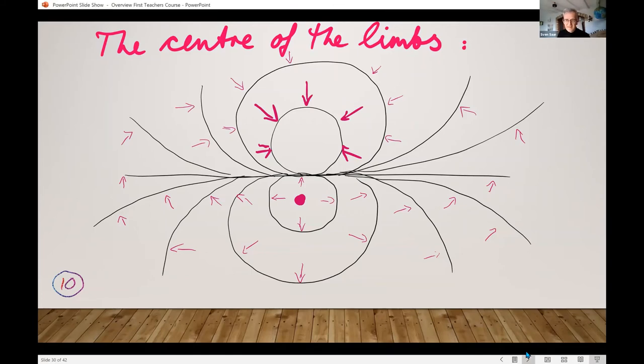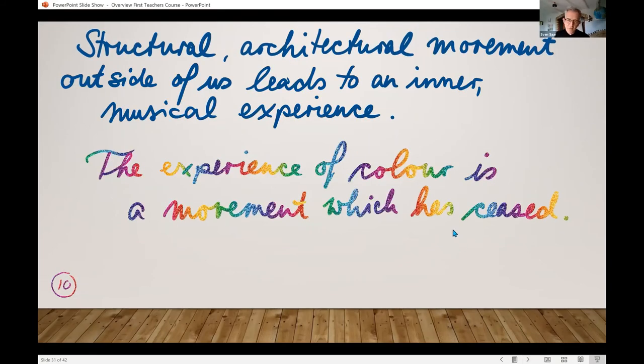It gets slightly easier again after that, when in the same lecture he becomes almost poetic. It's about how things that happen outside of us affect us on the inside. He says, anything that's structural or architectural on the outside touches us a little bit like music does. It makes us say, buildings sing in us, which is the first poetical thought. The next one, it's one of my favorite quotes in the whole lecture course. The experience of color is a movement which has ceased. Not color itself, but the experience of color.